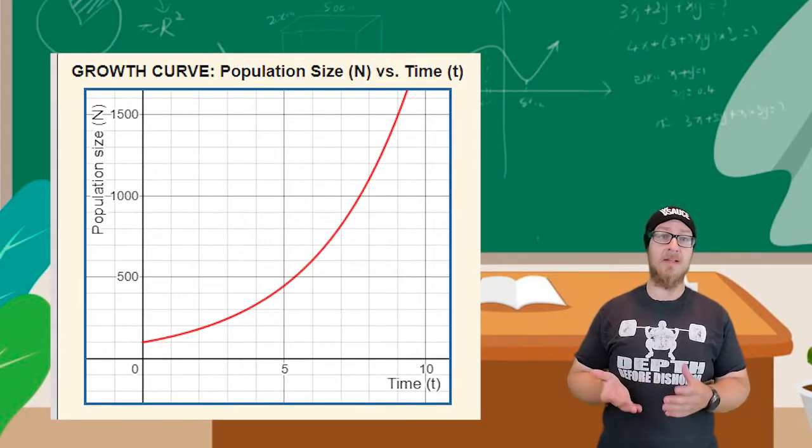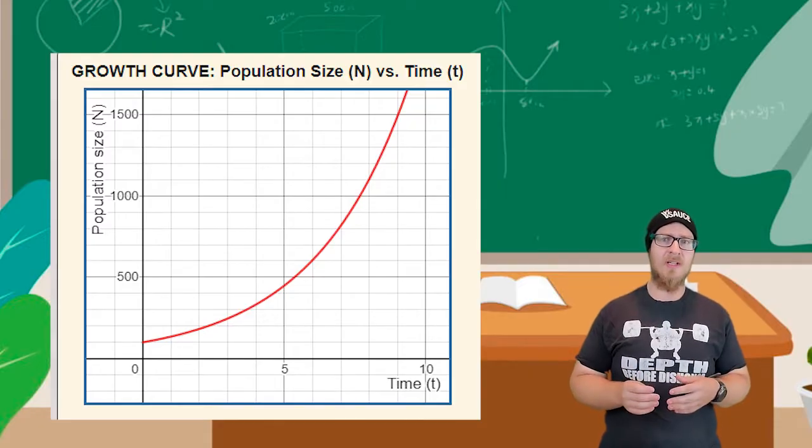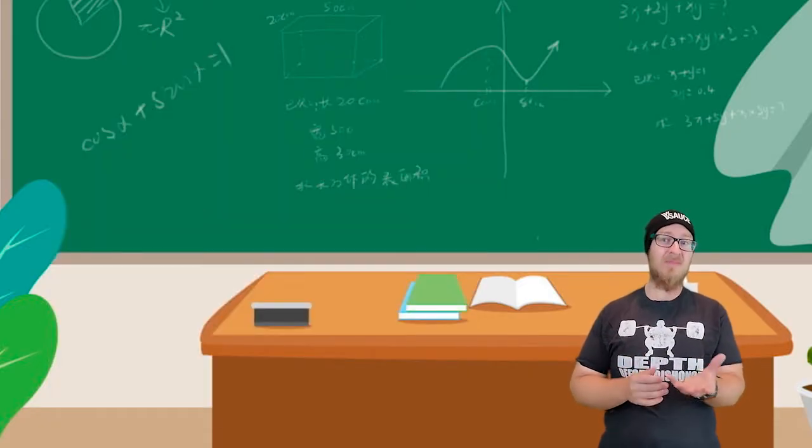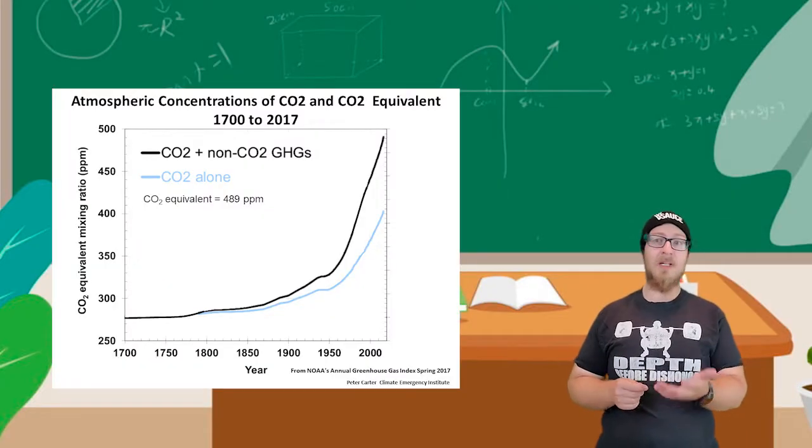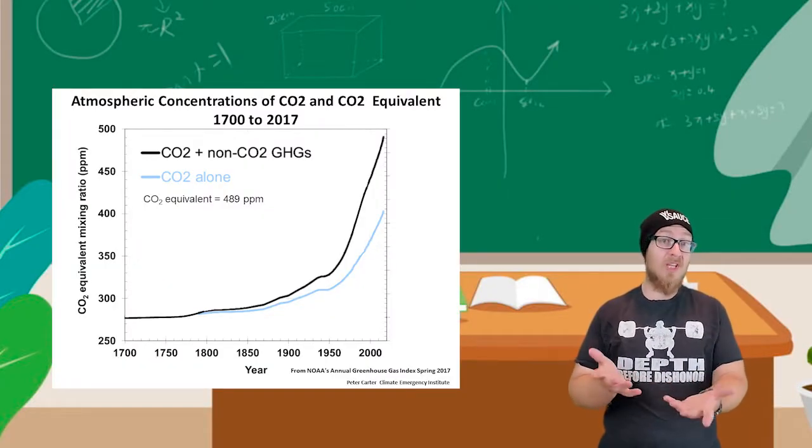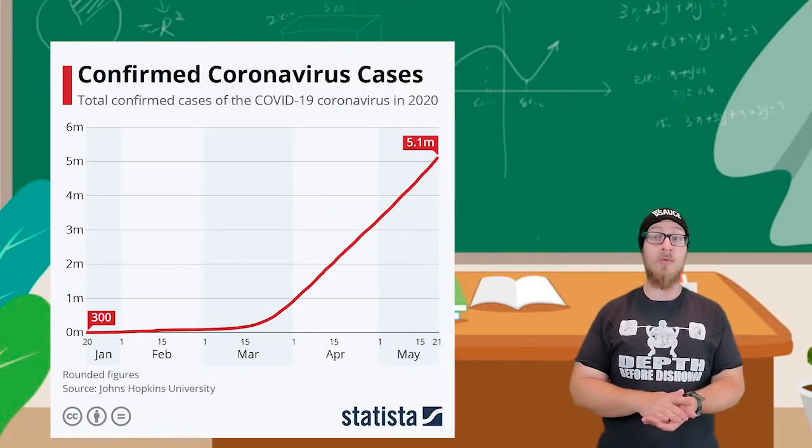We've all seen a graph like this. This is the graph of an exponential function. In nature, we see some examples of exponential relationships. The increase in carbon dioxide concentrations is increasing exponentially. The early stages of disease epidemics see exponential growth.